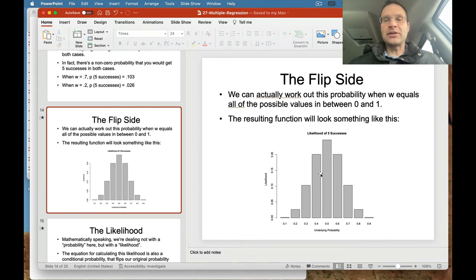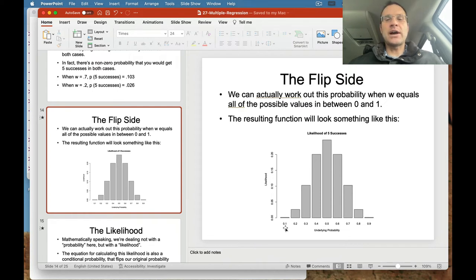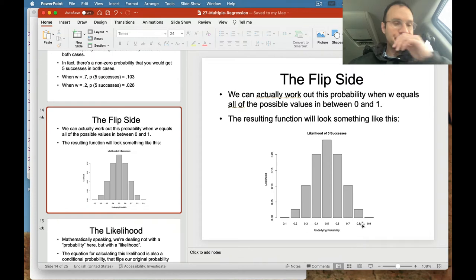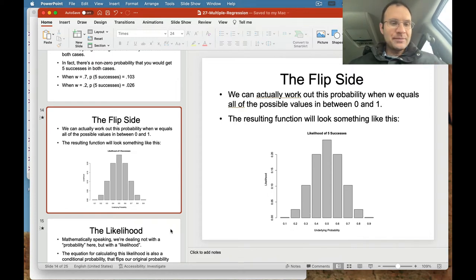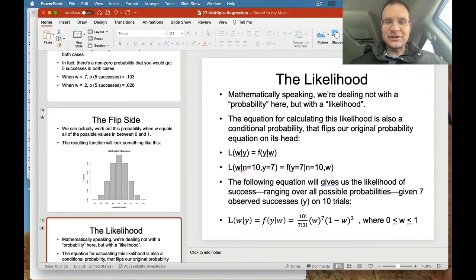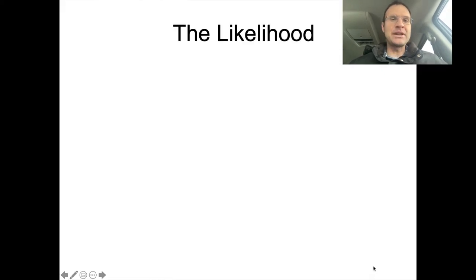Basically, this is saying we could change the probability on the x-axis, and when we do, that changes our likelihood of getting five successes. We can get five successes with a wide variety of different underlying probabilities. This is where the subtle distinction comes into play between probability and likelihood.